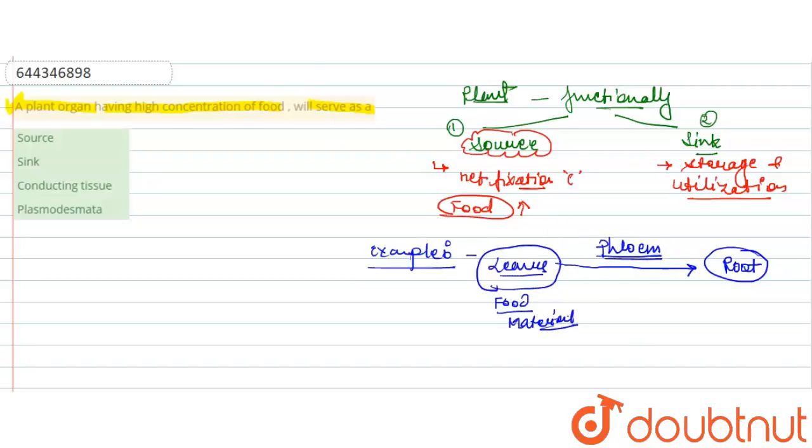Here we can consider the leaf is source and the root cells is the sink. So now I hope you all have got an idea about the source and sink.